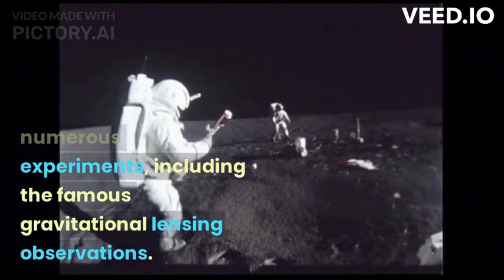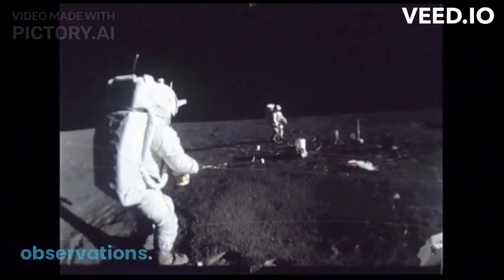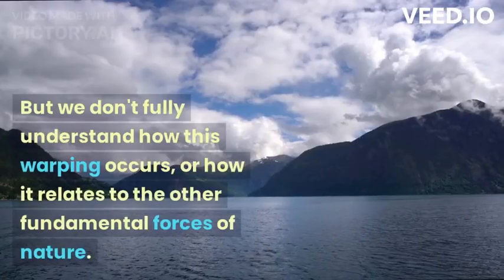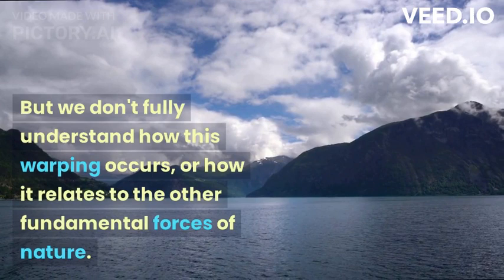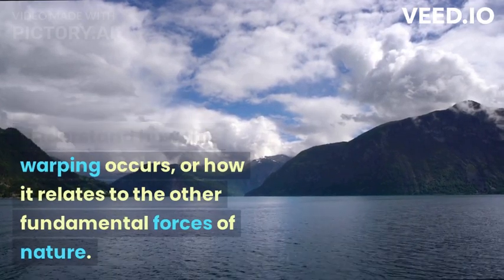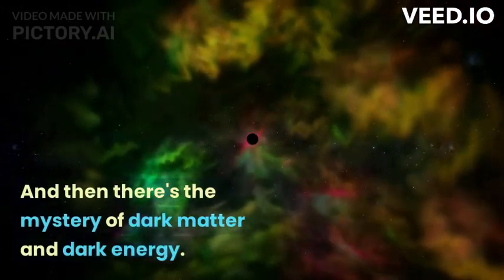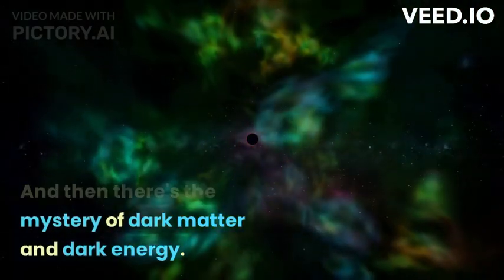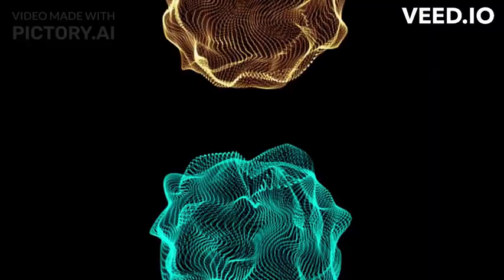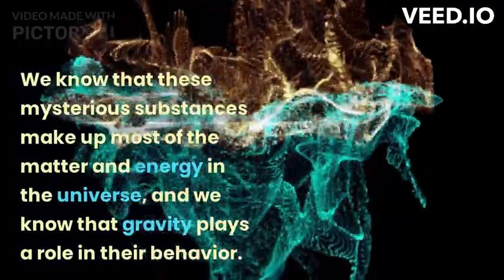We know that gravity warps the fabric of space-time, and that massive objects create gravitational wells that bend the path of light. This has been confirmed by numerous experiments, including the famous gravitational lensing observations.